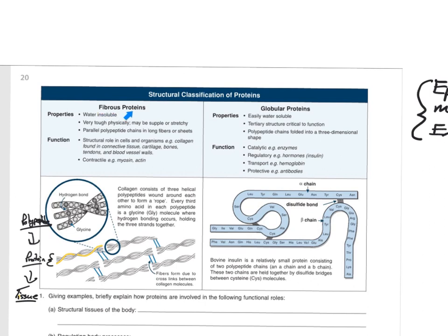The interesting thing about fibrous proteins is they're not soluble in water, which explains why you don't just dissolve when you go swimming. So we're lucky that these fibrous proteins are not soluble in water. They're very tough and stretchy — good especially if you need flexibility. They form parallel organizations as sheets so they can form layers and serve as structural components of cells and organisms.